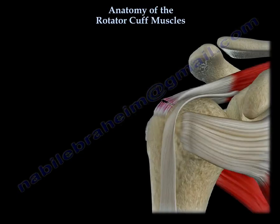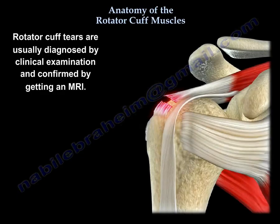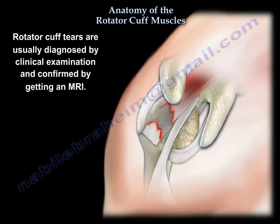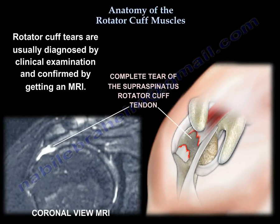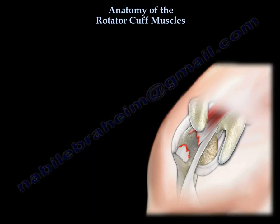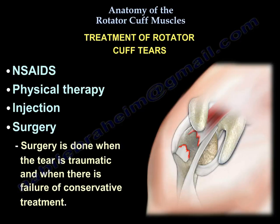The cuff tear is usually diagnosed by clinical exam, and the diagnosis is confirmed by an MRI. Treatment includes non-steroidal anti-inflammatory medication, physiotherapy, injections, and surgery. Surgery is indicated when the tear is traumatic or when conservative treatment has failed.